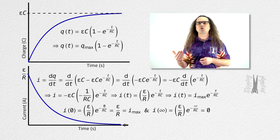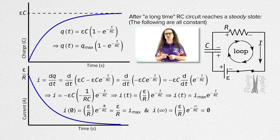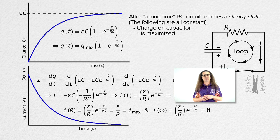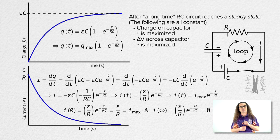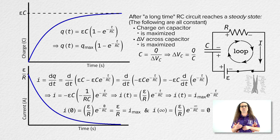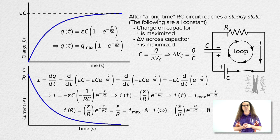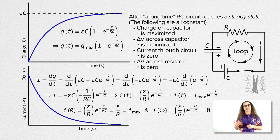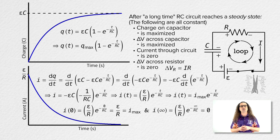After a long time, the RC circuit reaches a steady state: the charge across the capacitor is at its maximum value, and the electric potential difference is also steady at its maximum value, since it equals charge over capacitance and both are constant. The current through the circuit has reached a steady state value of zero, and the electric potential difference across the resistor is also zero because it equals current times resistance and the current is zero.